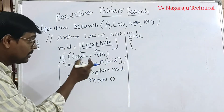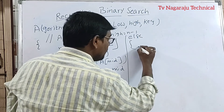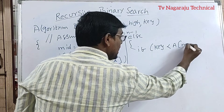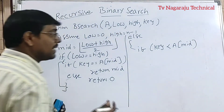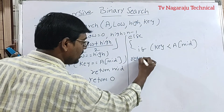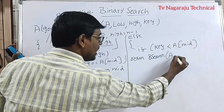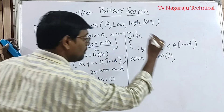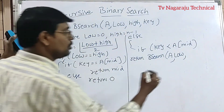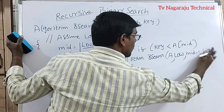Coming to the else part: if low is not equal to high, we check the condition. If key is less than A[mid], we search the left part by calling the function recursively: return BinarySearch(A, low, mid minus 1, key). That means low is fixed and high is updated to mid minus 1 for the recursive call.